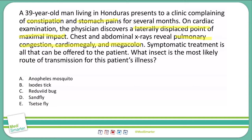The Anopheles mosquito transmits malaria, and this doesn't seem to fit malaria's signs and symptoms, so I'm going to mark that one out. The Ixodes tick transmits Lyme disease — we're not seeing any indication this is Lyme disease or babesiosis. Also, Lyme disease locations don't really fit someone in Honduras; that's more in the northeastern and central United States. So the Ixodes tick is probably not my answer here.